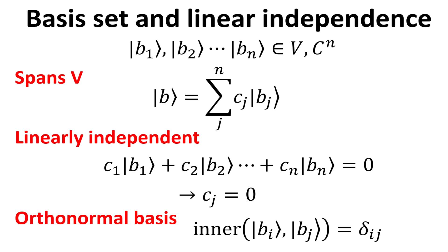We can also extend these concepts to the complex vector space V of dimension Cn. The basis set consists of n basis vectors b1, b2 to bn, and spans the complex vector space Cn, such that any vector b-ket can be written as a linear combination of the basis vectors, where cj is a set of complex numbers. To form a basis set, we need n linearly independent vectors — linear independence is satisfied if the only way the linear combination of all basis vectors equals the null vector is for all complex numbers cj to be zero. Lastly, the orthonormal basis set is a special type where the inner product of bi-ket and bj-ket equals the Kronecker delta function — the inner product is 1 when i equals j, and zero otherwise.